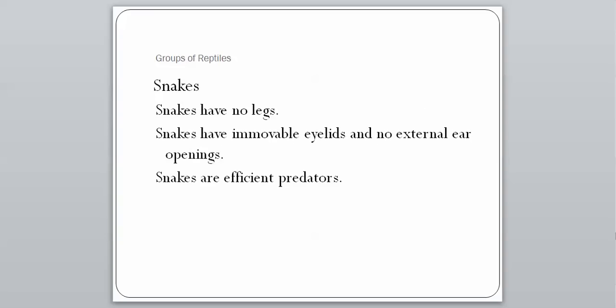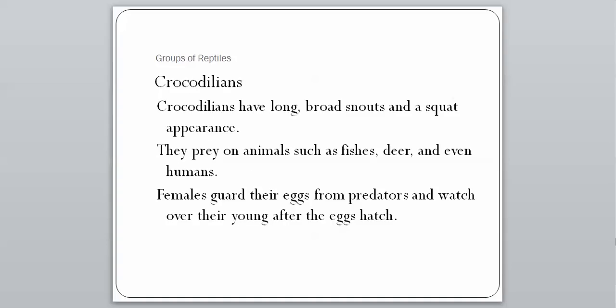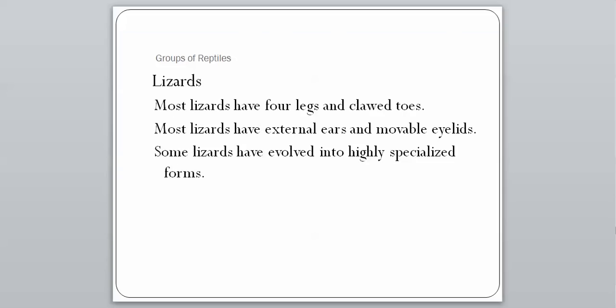All a snake is, is a lizard with no legs — lizards came first evolutionarily, then snakes. Snakes have no legs, immovable eyelids, and no external ear openings, and they are very efficient predators. We've talked about their adaptations for tasting the environment, detecting body heat, and picking up vibrations — all of those things make them very efficient predators. Snakes and lizards together make up one group.